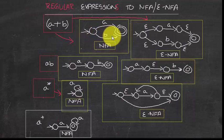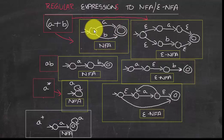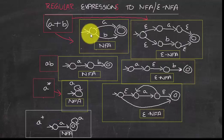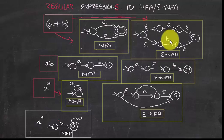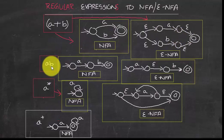When converting a union expression to an NFA, you can reach the accepting state with either A or B as input. For concatenation, it's straightforward: move to the next state with input A, then to the final state with input B.